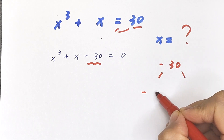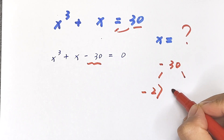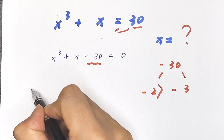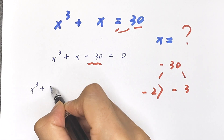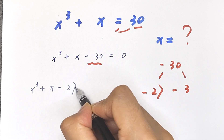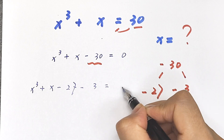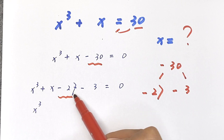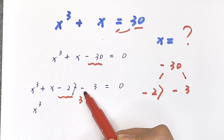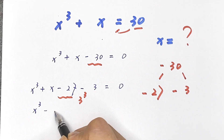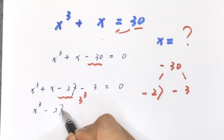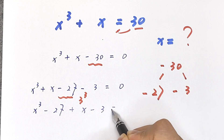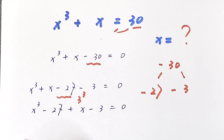Negative 30 can be split as negative 27 minus 3. So it means x cubed plus x minus 27 minus 3 equals 0. And x cubed minus 27 is the same as x cubed minus 3 cubed, so we write x cubed minus 3 cubed plus x minus 3 equals 0.